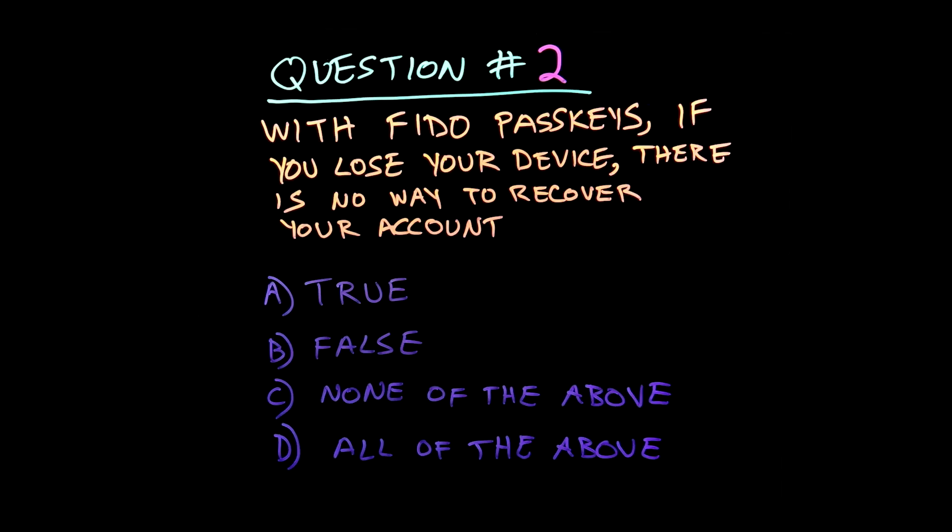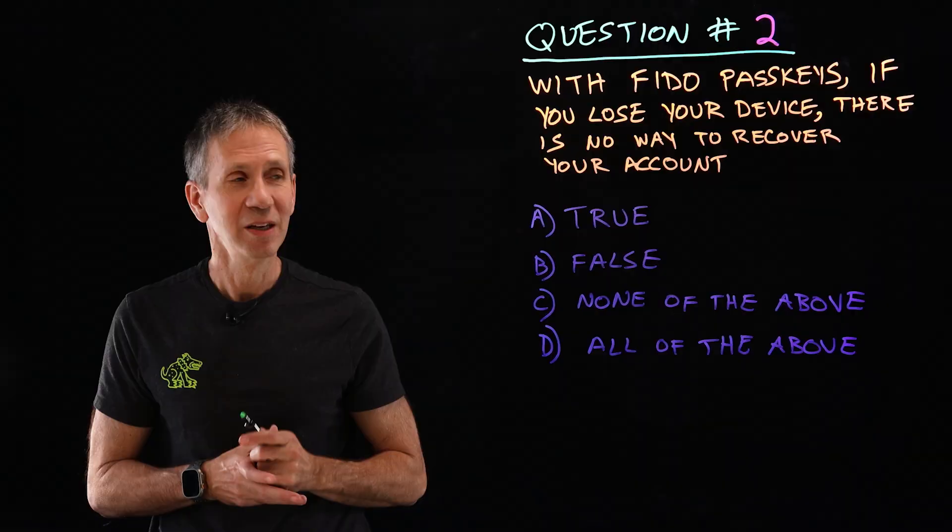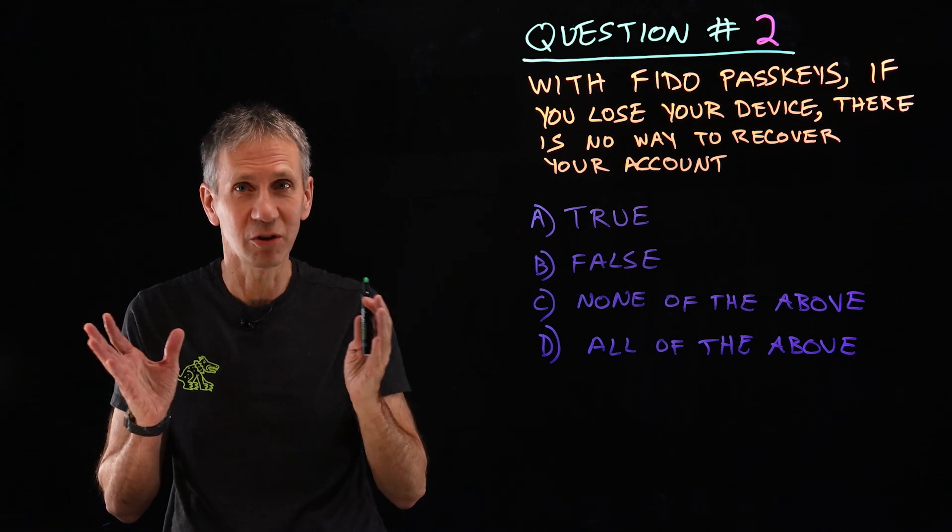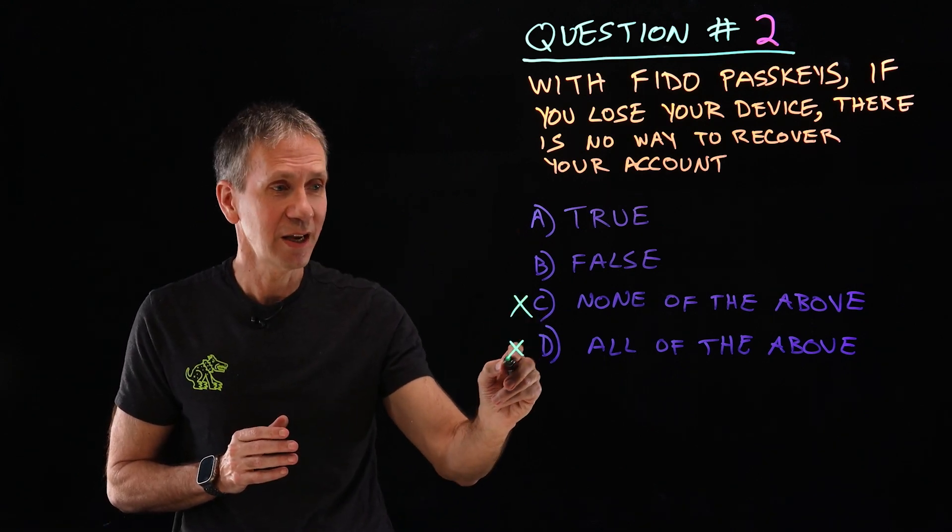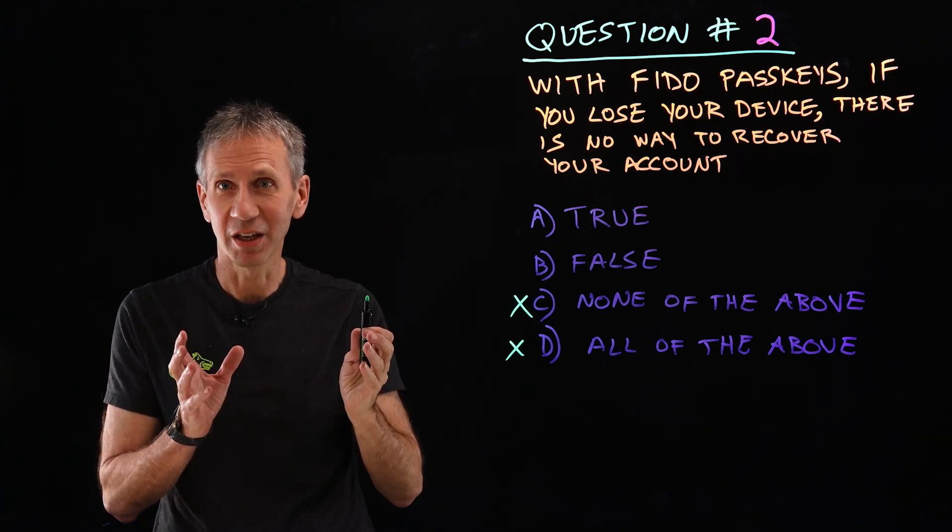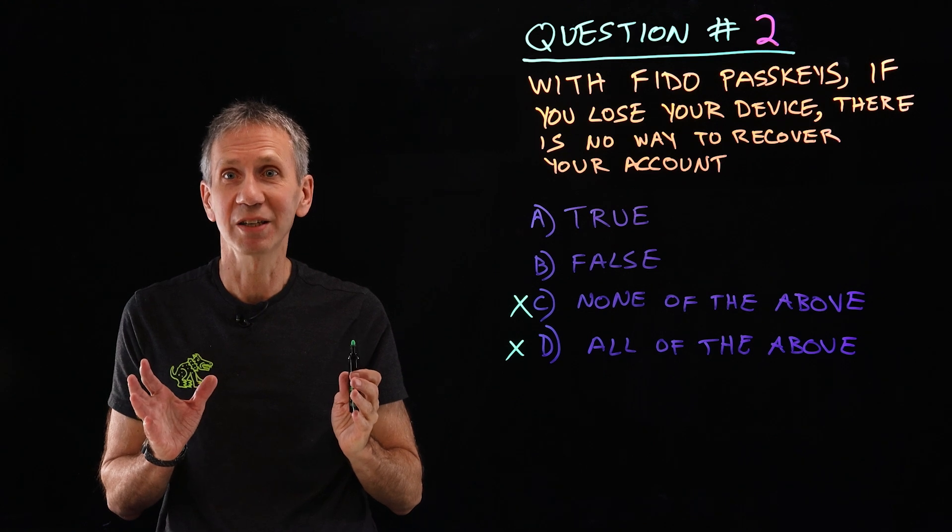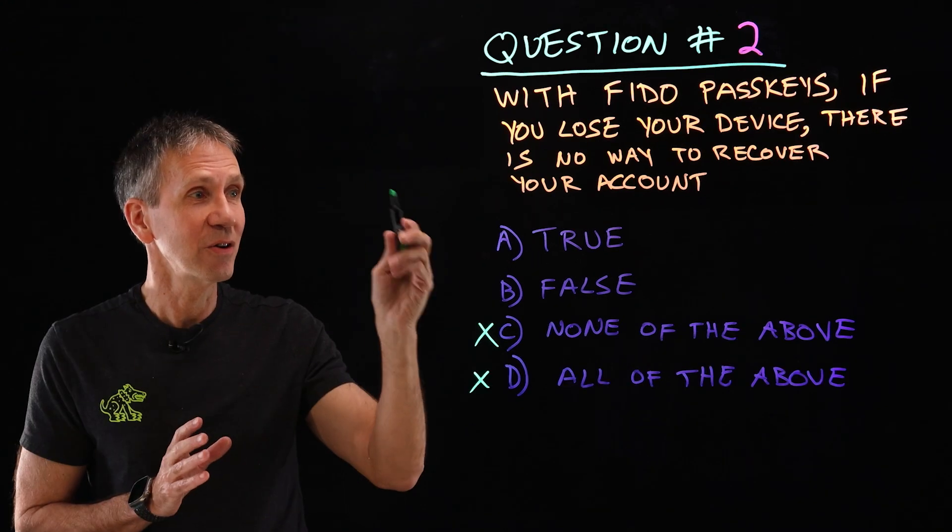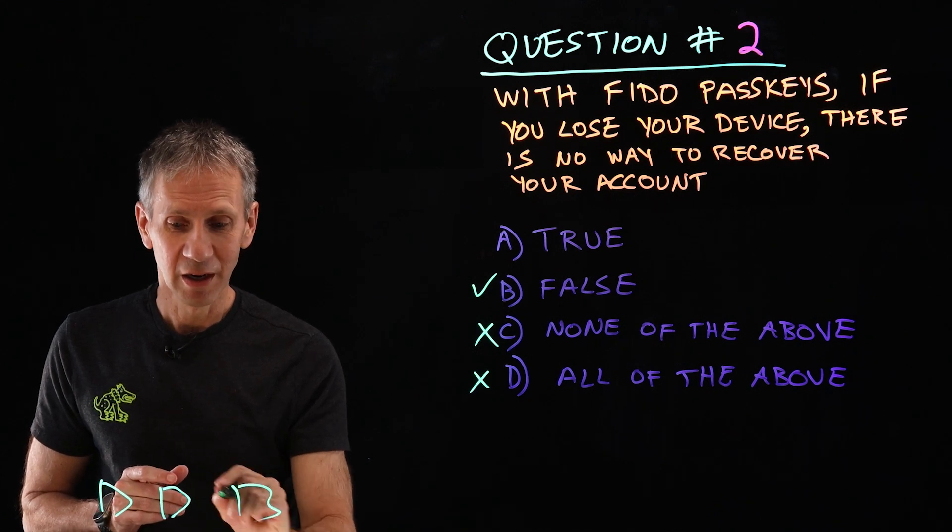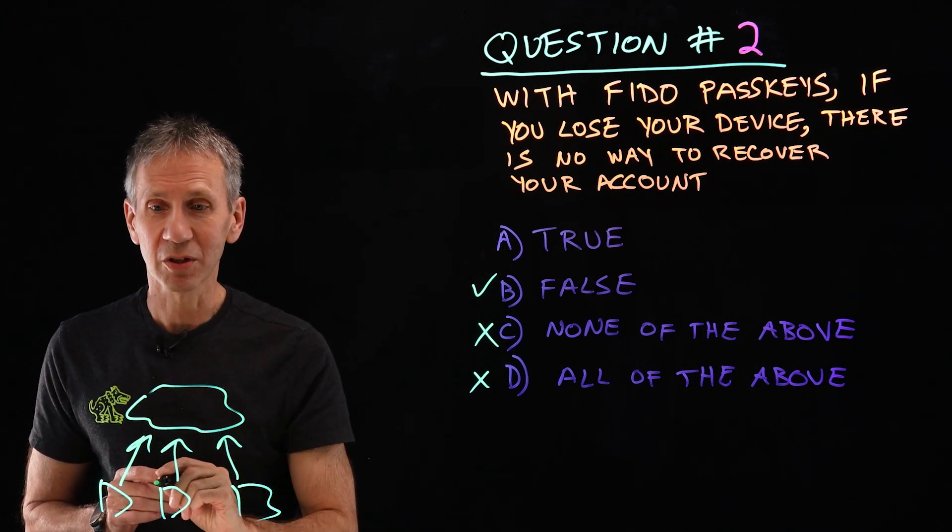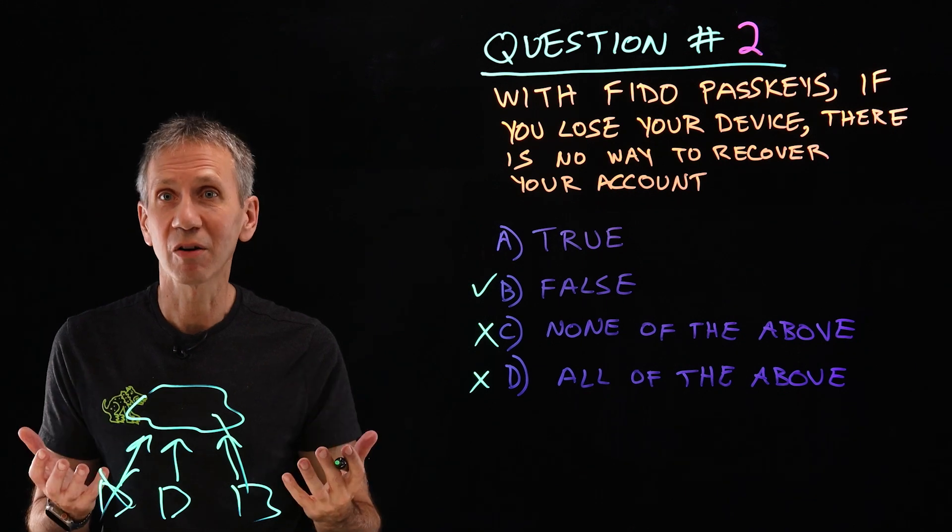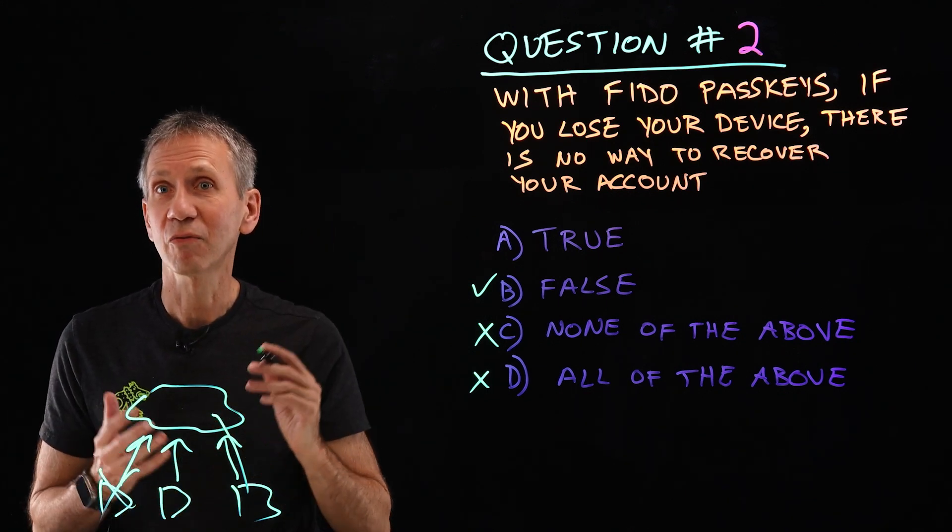Question two. With FIDO passkeys, if you lose your device, there is no way to recover your account. Either that's true or false. Hopefully you're aware, unless there's some sort of superposition of states and some odd Schrodinger's cat situation, it's not neither, and it can't be both. So we'll eliminate those right off the bat. Now, is it true or is it false? The reason I put this one is when I did a FIDO video on passkeys, the number one question people asked was about what happens if I lose my device. So I want everyone to understand that, in fact, there is a way to recover. In fact, you can recover a number of different ways. One is if you've got different devices, they can all sync up to some cloud service so that if I lose this one, I can just recover my passkey on another device. Or I can do regular account recovery just like when you lose your password and click forgot my password.